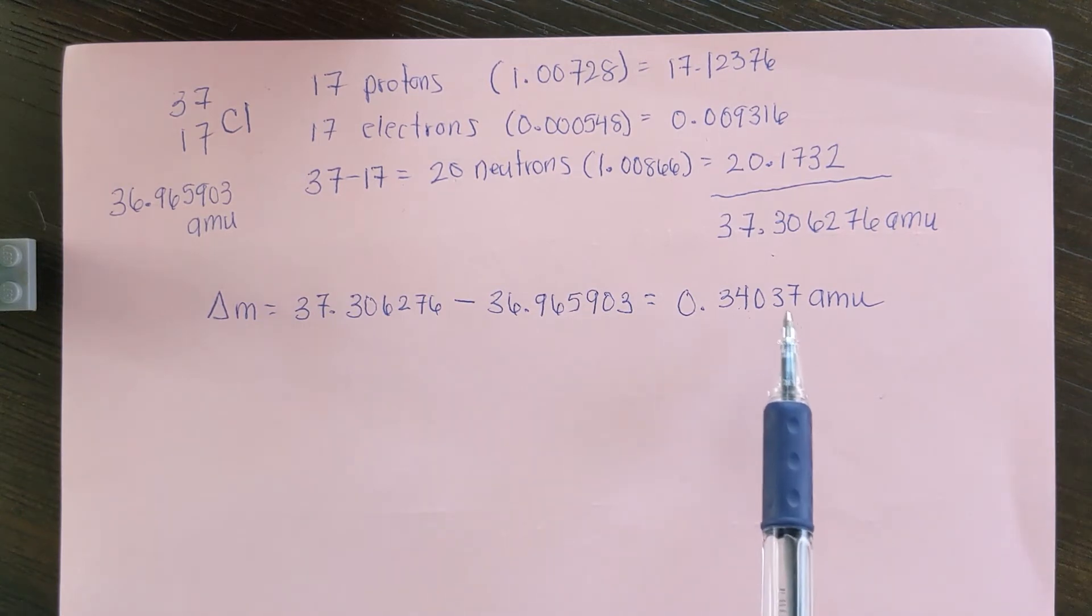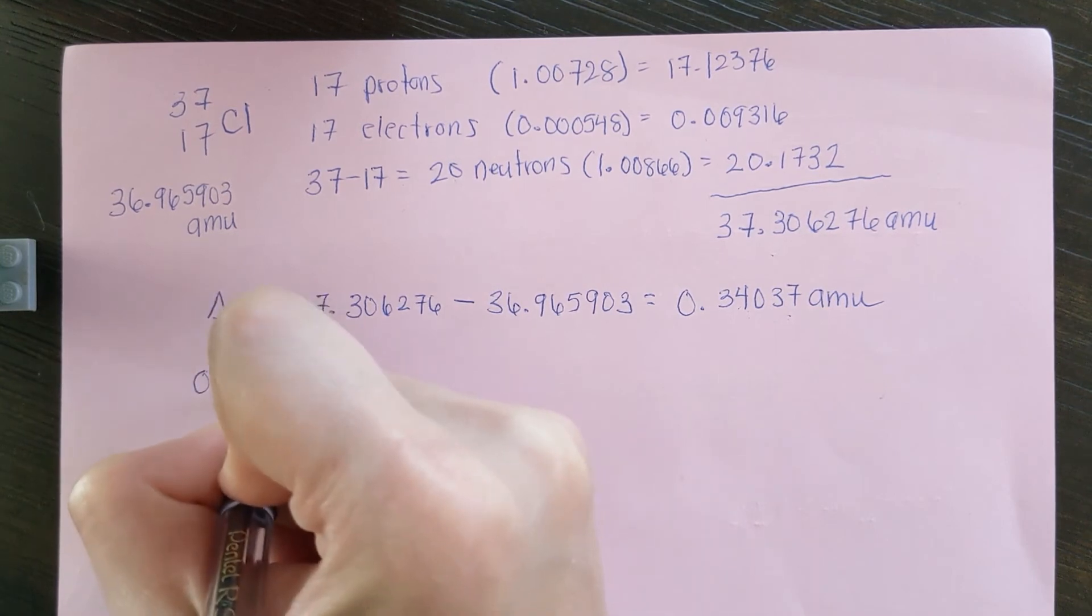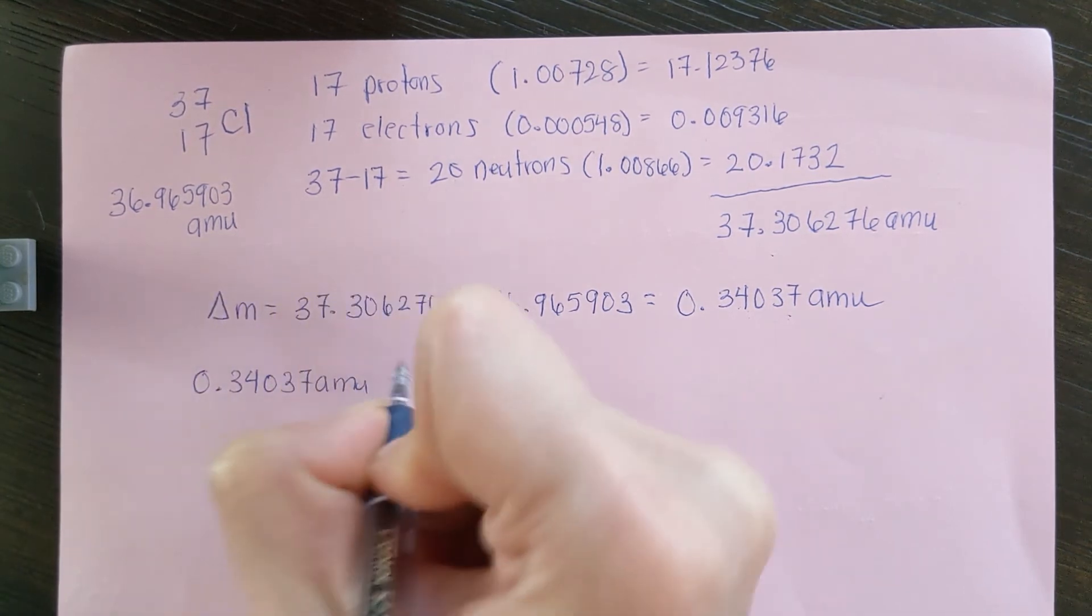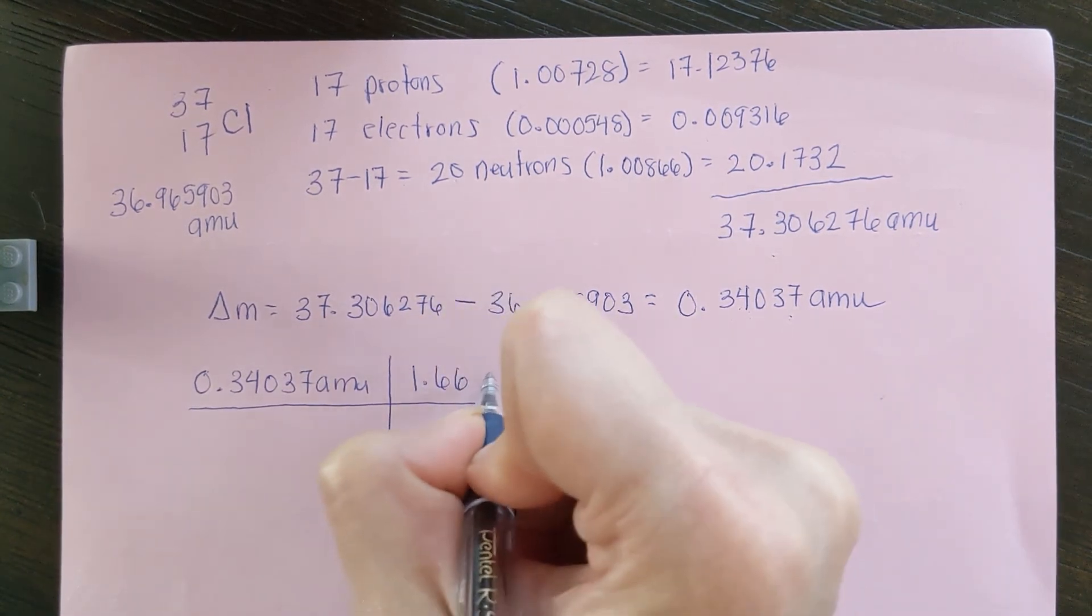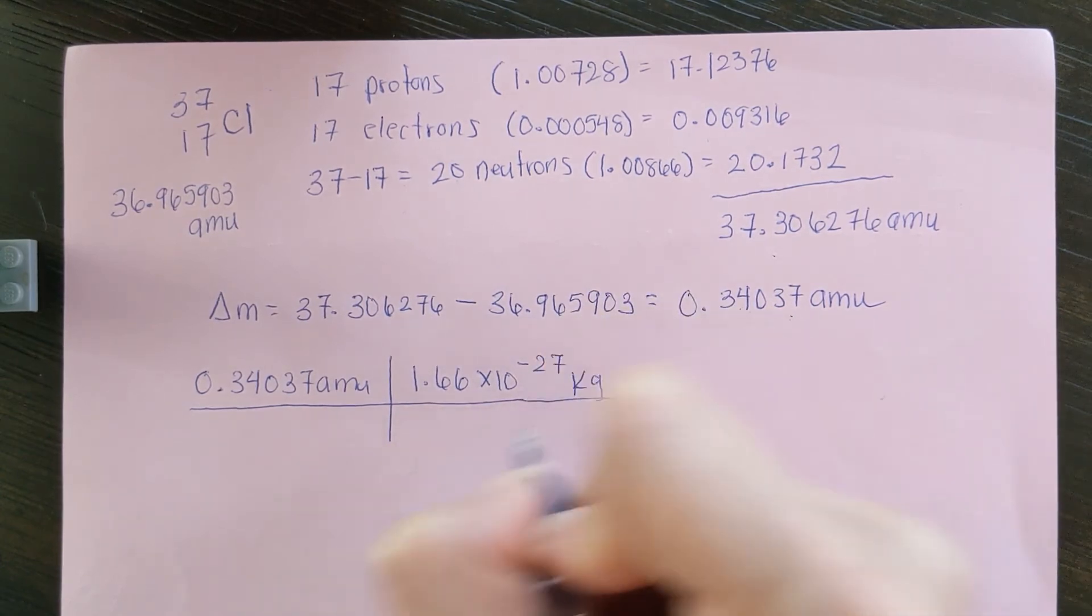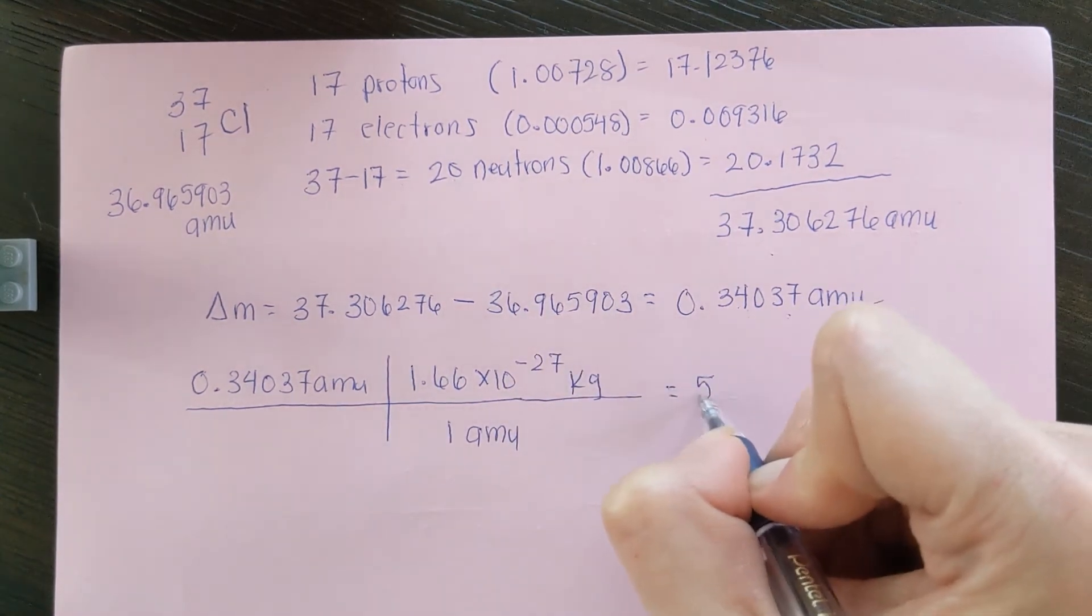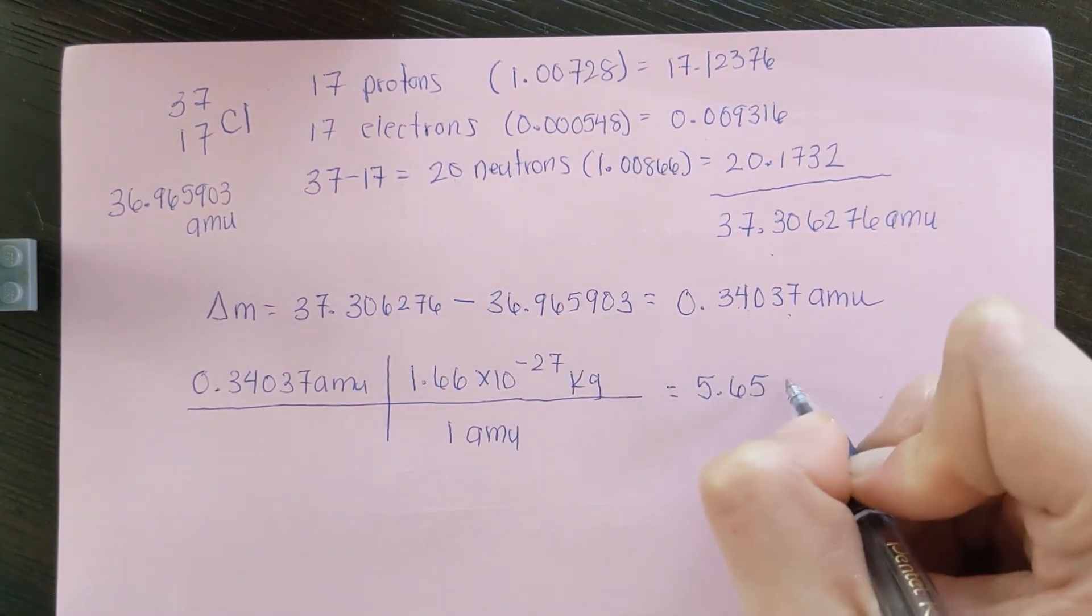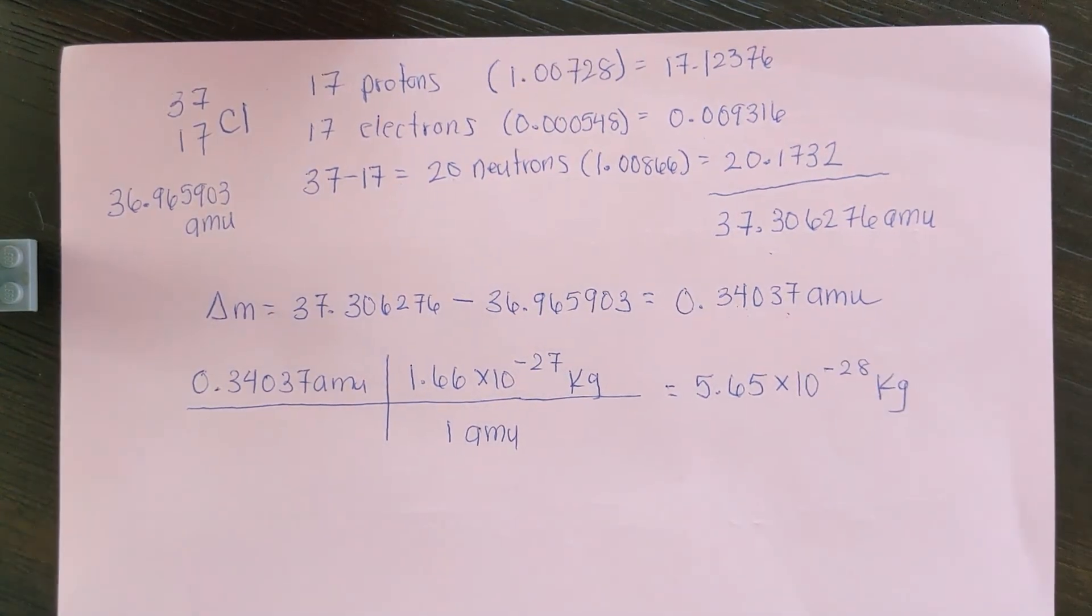So to use E equals mc squared to get energy out of that in joules, this atomic mass unit needs to be in kilograms. So 0.34037 atomic mass units, multiplied by 1.66 times 10 to the minus 27 kilograms per 1 amu, the mass deficit is 5.65 times 10 to the minus 28 kilograms.